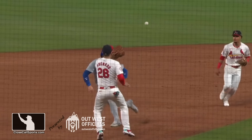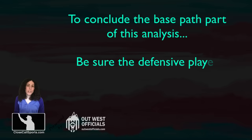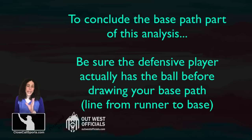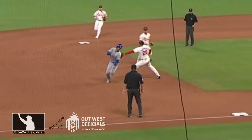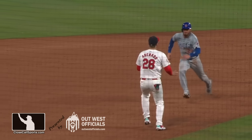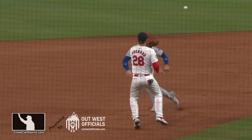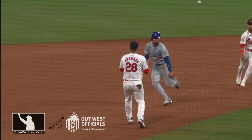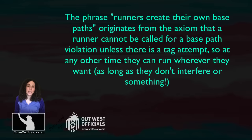It's such a judgment call. In conclusion for the base path issue: I don't know if it happened here or not, but as an umpire, do not draw your base path too early, because it looks a lot worse than it actually is. When we slowed this down, it looked a lot closer than in real time because the runner veered to the right before the fielder possessed the ball — which the runner is allowed to do. You create your own base path, and when you're not avoiding a tag because the ball's in the air, there is no tag to avoid.